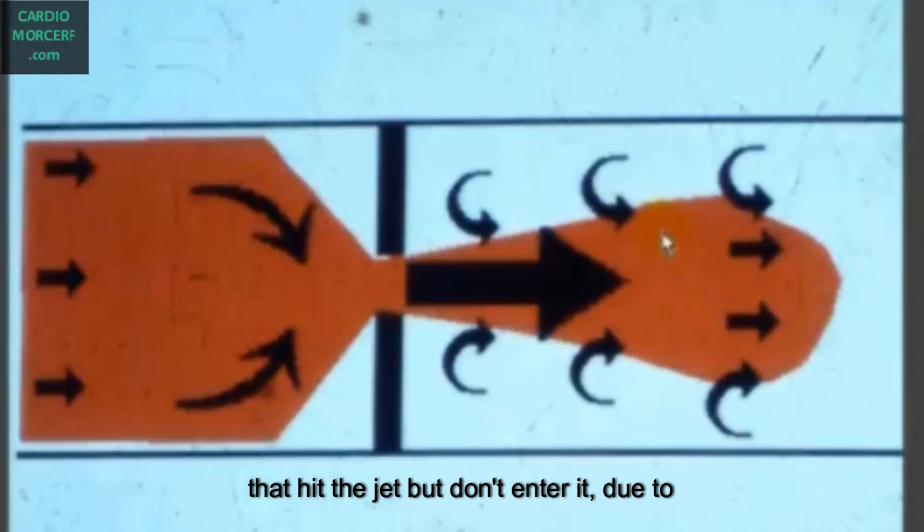The blood cells that hit the jet but don't enter it due to the angle in relation to the direction of the jet will spiral and rotate and turn around the jet, causing red cells in all directions and velocities. In other words, a turbulent flow. Notice that the turbulent flow is around the jet, but the jet is laminar until it finishes due to its mass increase.